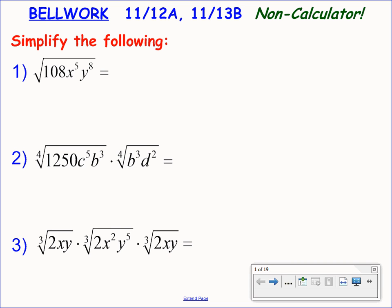We know a radical expression is not fully simplified if it contains any perfect nth powers inside. Right now, number one is a square root. So in order to simplify that fully, I need to go through and find any perfect square factors that are hiding inside of the radical. Let's go ahead and take a look.